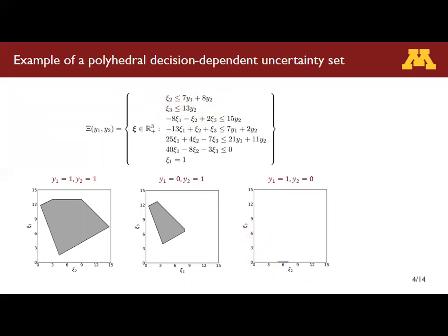In practice, this can mean one of two things. Either C3 has to be 0 when Y2 is 0, or — the more common case — C3 does not even materialize if Y2 is 0. This means that C3 is physically meaningless, so its value is irrelevant to the problem, and we just fix it to 0 for convenience. Finally, when Y1 and Y2 are both 0, the uncertainty set is empty, which doesn't make sense, hence the solution Y equals 0 should be infeasible.